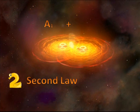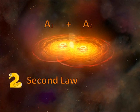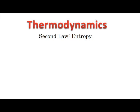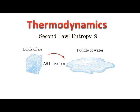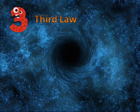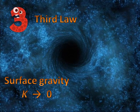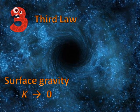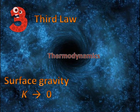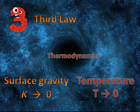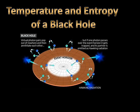The second law says that the area of the event horizon can never decrease. In thermal physics, entropy never does. The third law reflects the impossibility to reduce the surface gravity to zero. In thermodynamics, it is impossible to reach absolute zero.